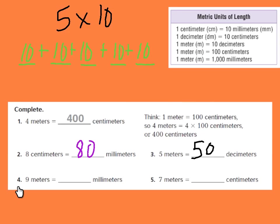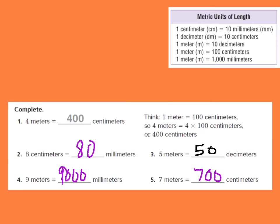Now try numbers four and five on your own, then press play for the answers. For number four, nine meters equals how many millimeters? My chart says one meter equals 1,000 millimeters, so nine times 1,000 equals 9,000. Number five: seven meters equals how many centimeters? One meter equals 100 centimeters, so seven times 100 equals 700 centimeters in seven meters.